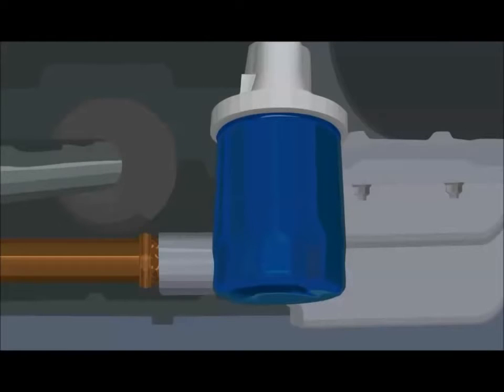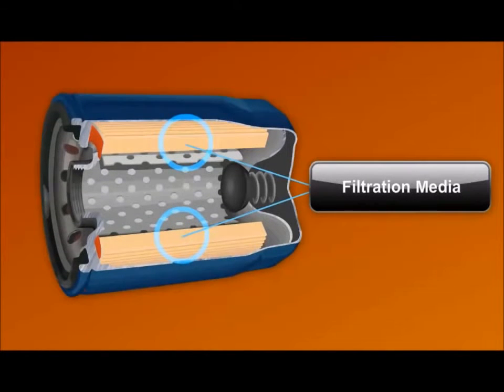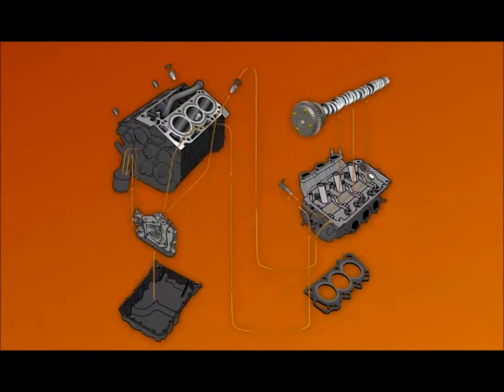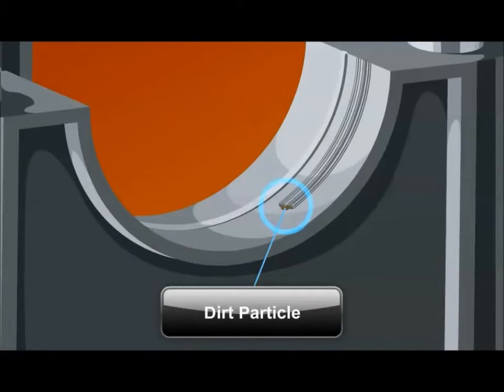From the oil pump assembly, oil flows to an oil filter. Inside, filtration media traps contaminants such as dirt or metal particles. If allowed to circulate in the oil system, these contaminants can cause wear on the bearing surfaces of the engine.